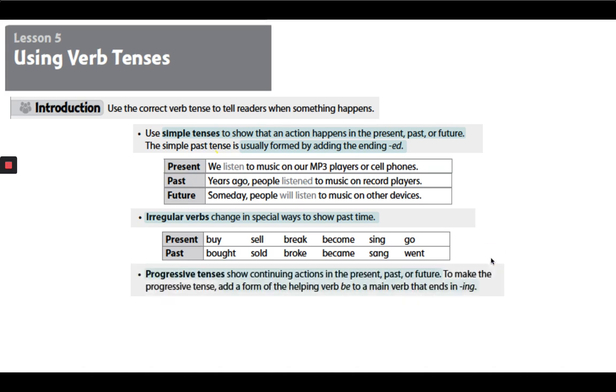Progressive tenses show continuing actions in the present, past, or future. To make the progressive tense, add a form of the helping verb be to a main verb that ends in -ing.